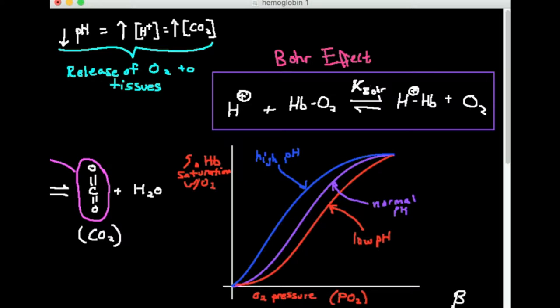In this video, we're talking about hemoglobin — specifically over the next couple of videos, we're going to talk about two different properties of hemoglobin and how different factors affect them. The first topic is the Bohr Effect, and then after that we'll move into the Haldane Effect. I'm going to break these topics up into multiple videos so they're shorter and you can pick and choose what's important for your particular class.